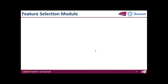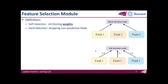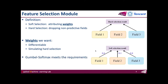Now I am going to introduce the feature selection module. I first define soft selection and hard selection. Soft selection would not reduce the number of features — it only attributes weights to feature embeddings — while hard selection directly drops non-predictive feature fields. We want the weights to be differentiable and close to 0 or 1, since a moderate value would result in a gap between the search and the retraining stages. The Gumbel Softmax meets these two requirements, so we utilize it to generate weights for the soft selection in the search stage.